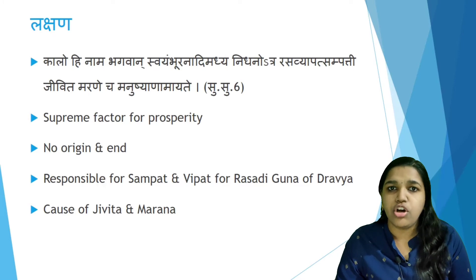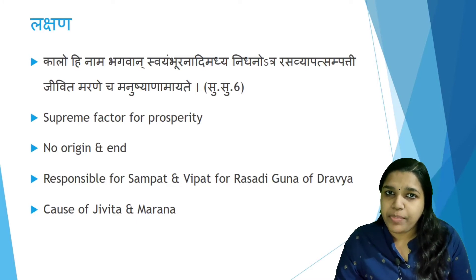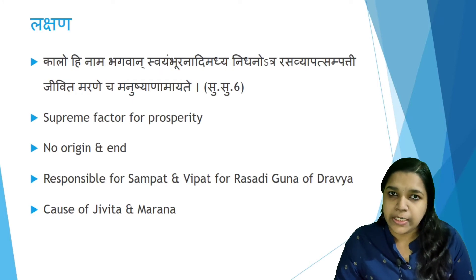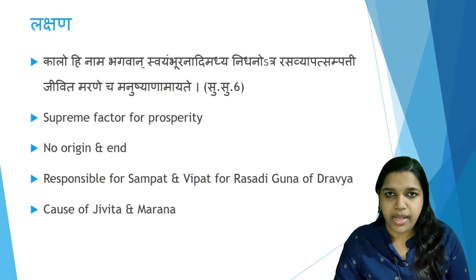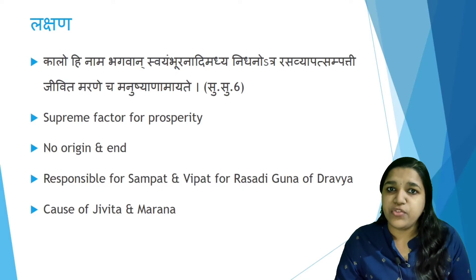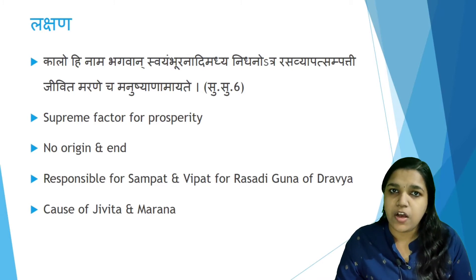The Sampat or Vipat — the good or bad effect — and the qualities of the Dravyas are based on this Kala. The Sampat and Vipat of the Rasadi Gunas of a particular Dravya depend on this Kala. Similarly, in the case of human beings, Jivita and Marana are associated with Kala. Kala is responsible for Jivita and Marana, and is therefore considered to be Bhagavan — the Supreme Factor with no end or origin.